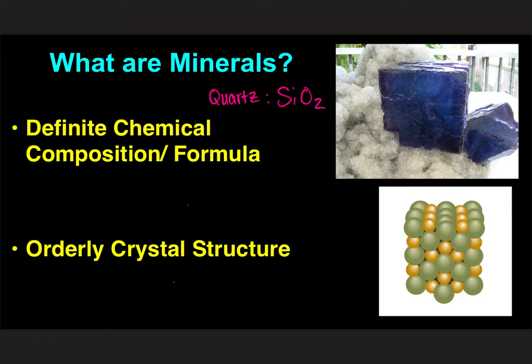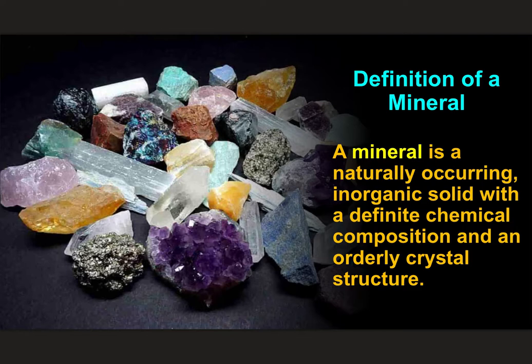Not only is quartz always SiO2, but the mineral quartz — like all minerals — also has an orderly crystal structure, which means those atoms are put together in the same way in all the quartz in all the world. So when I pick up a piece of quartz, it's always basically the same stuff. It may look a little different, it may have a different color, but if I was looking under a microscope I would see the same atoms arranged in the same way. That's what makes a mineral a mineral.